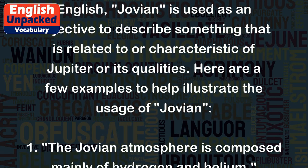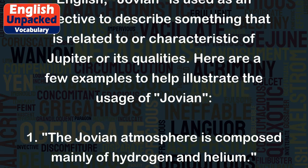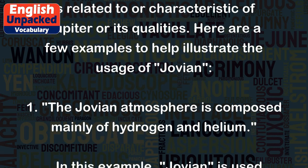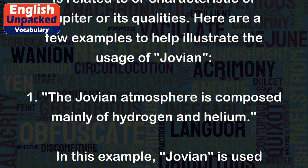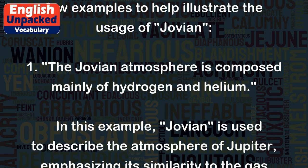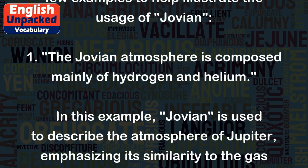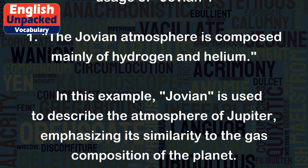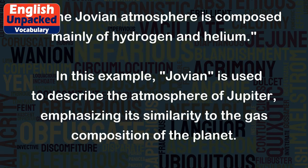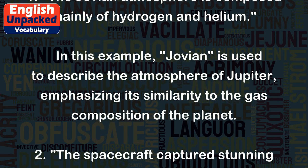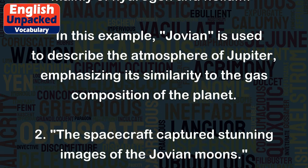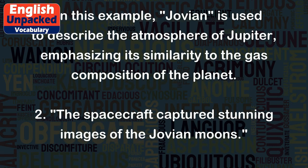Here are a few examples to help illustrate the usage of Jovian. 1. The Jovian atmosphere is composed mainly of hydrogen and helium. In this example, Jovian is used to describe the atmosphere of Jupiter, emphasizing its similarity to the gas composition of the planet.